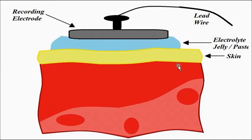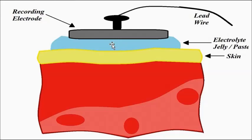Let's say this is the specific part of the body where the biomedical measurement has to be done. This is the electrode which is placed on the specific body part with the help of electrode paste or jelly to achieve proper adhesion and firm contact. The interface because of the contact between the electrode and the electrolyte is called the electrode-electrolyte interface, and the interface because of the contact of the electrolyte with the skin is called the electrolyte-skin interface.